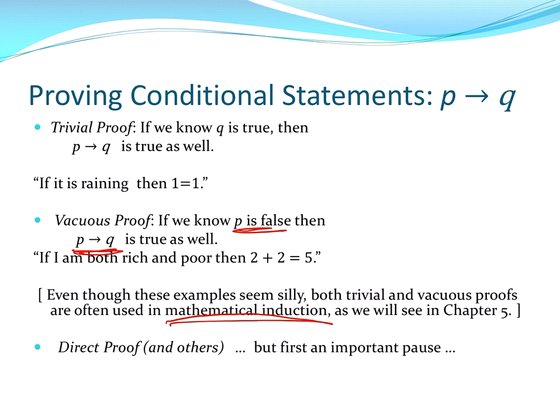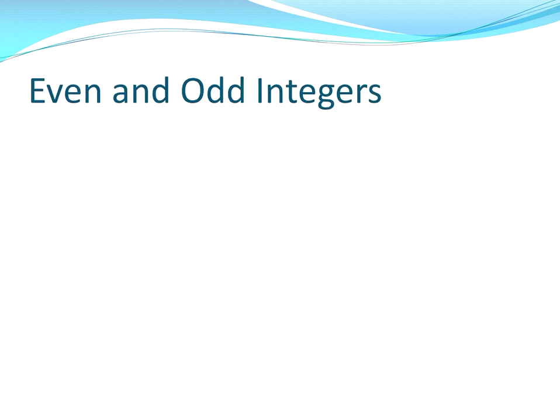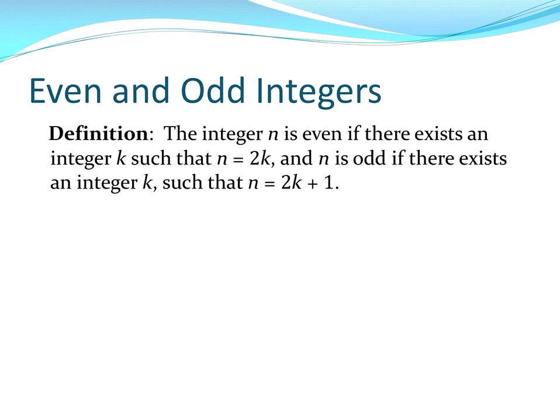But first, in order to exhibit this proof, we're going to give another definition, and that is regarding even and odd integers. All right, definition. An integer n is even if there exists an integer k, such that n equals 2 times k. And n is odd if there exists an integer k, such that n is equal to 2k plus 1.